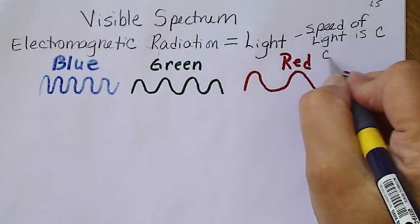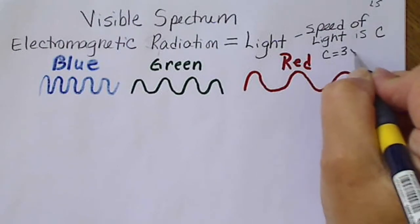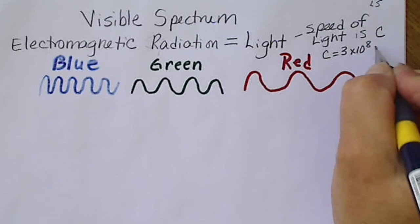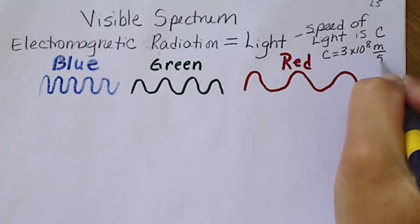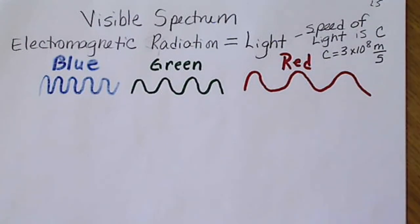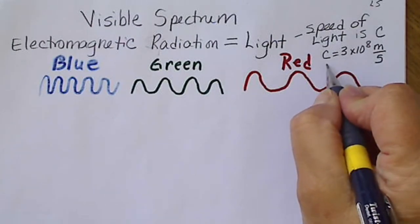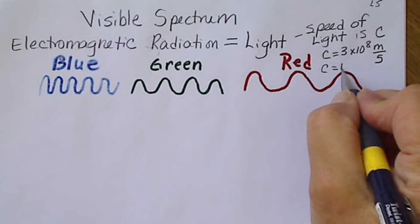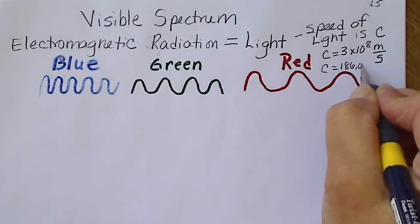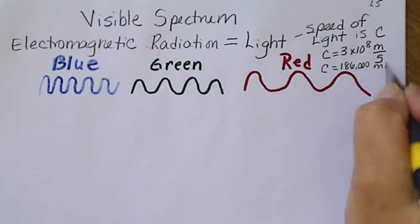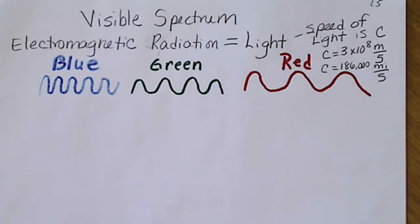C equals 3 times 10 to the 8 meters per second. If we converted meters per second into miles per second, the speed that light travels would be 186,000 miles per second, or about 6 trillion miles per hour.